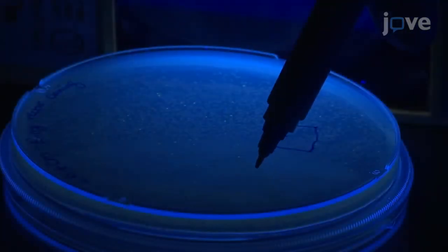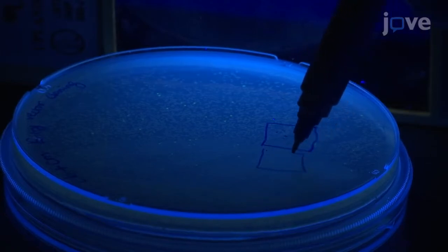To screen the plate, place it on an ultraviolet or blue light transilluminator. The SFGFP containing colonies will fluoresce under the UV light.